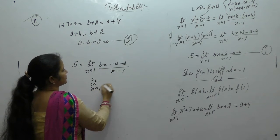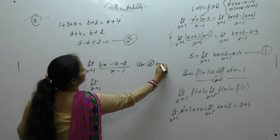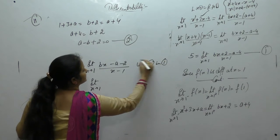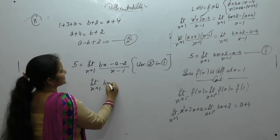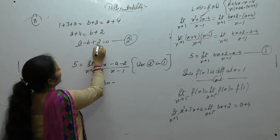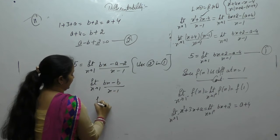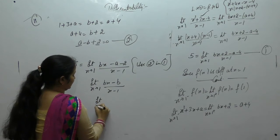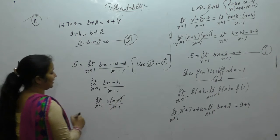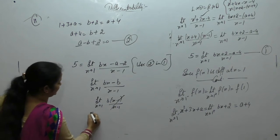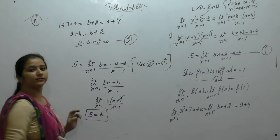Limit x tends to 1. Use equation 2 in equation 1. Taking bx, with a plus 2 having value b, take b common: x minus 1 over x minus 1. These cancel, so we get the value of b as 5.